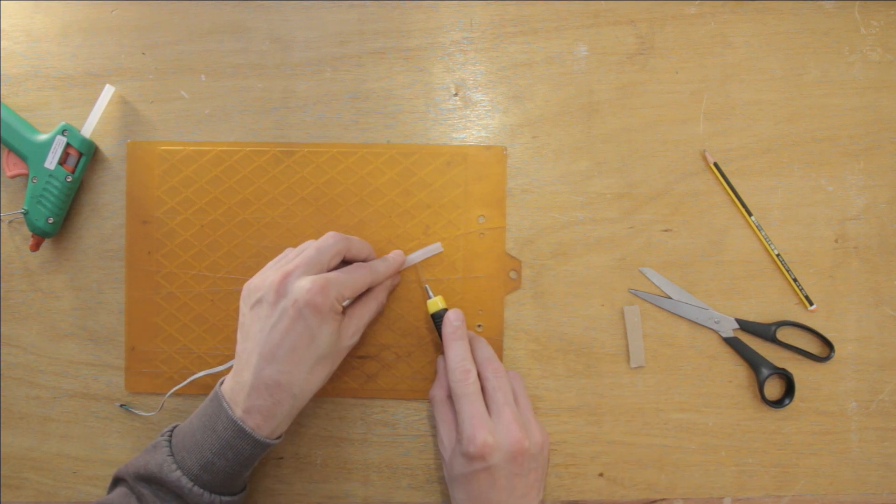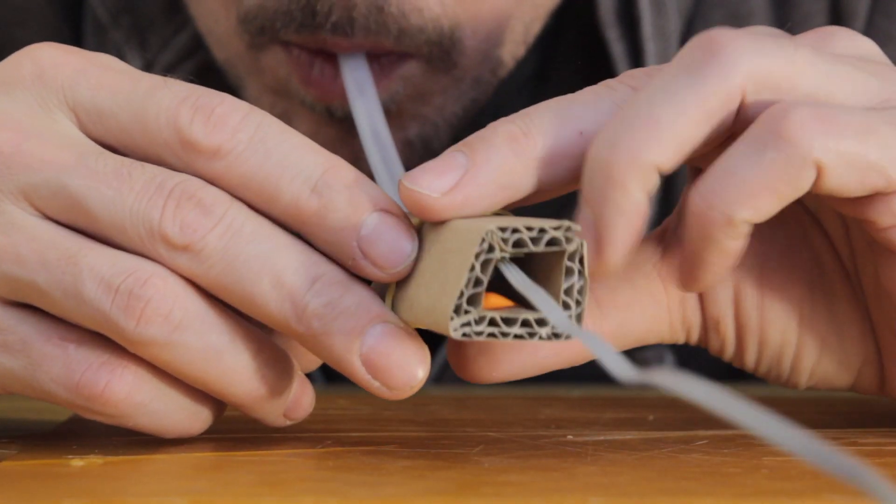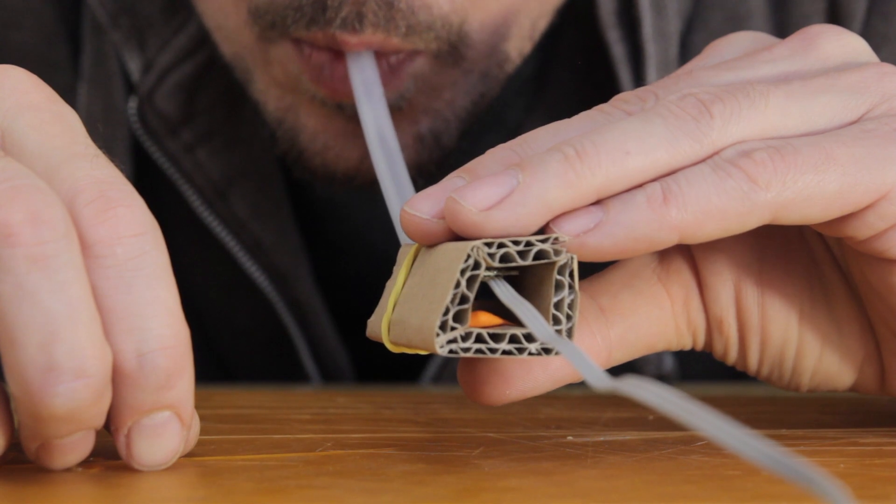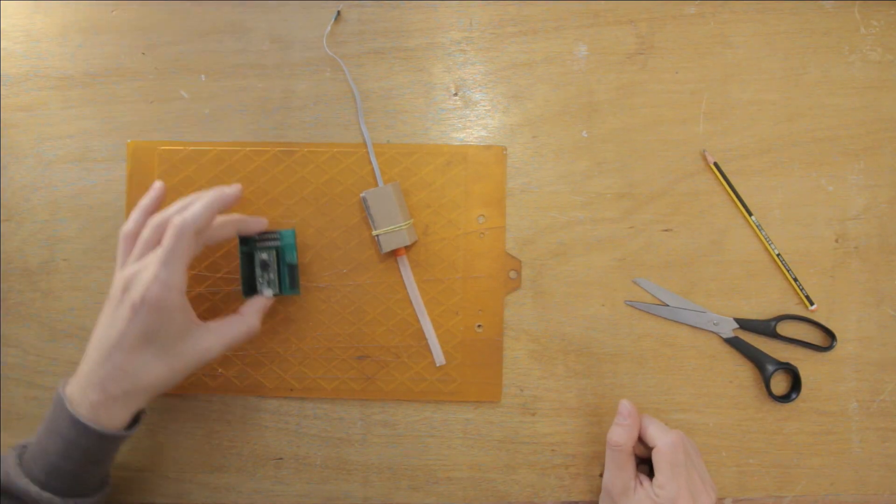The final touch is an exit hole for the air pressure. Just cut a small hole smaller than the inside diameter of the tube in the side of the tube like this. Now I can blow continuously in the tube and vary the balloon expansion by blowing harder or softer. This breath sensor is done.